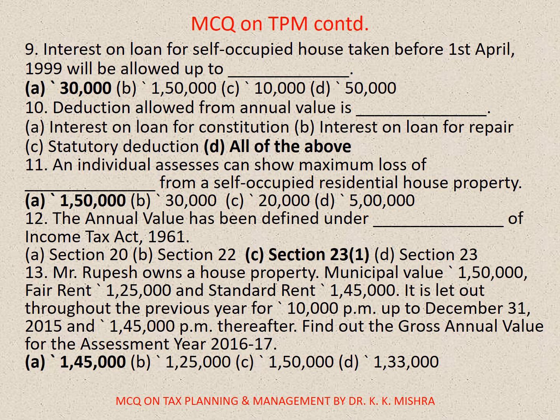Question number 10: Reduction allowed from annual value is — A. Interest on loan for construction, B. Interest on loan for repair, C. Statutory deduction, D. All of the above. Correct option is D: All of the above. Note: Tax slabs change every year, so keep this in mind and select correct options based on the given data or information.